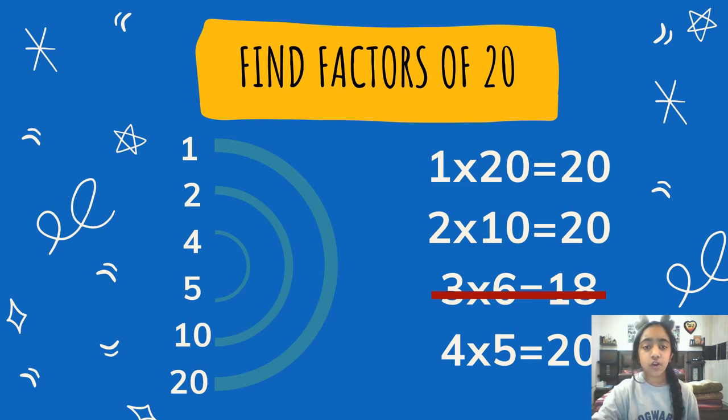Next is 4. So 4 times 5 is 20. We add 4 and 5 to our list and add the arc. We stop there as 4 and 5 are consecutive numbers. There we have all the factors of 20 which are 1, 2, 4, 5, 10, and 20.